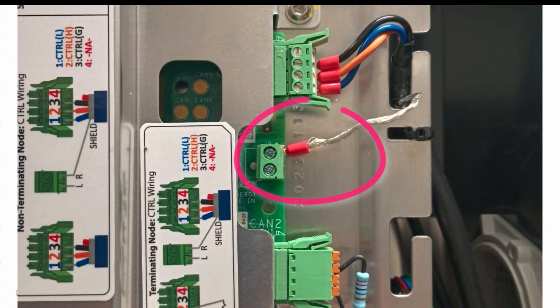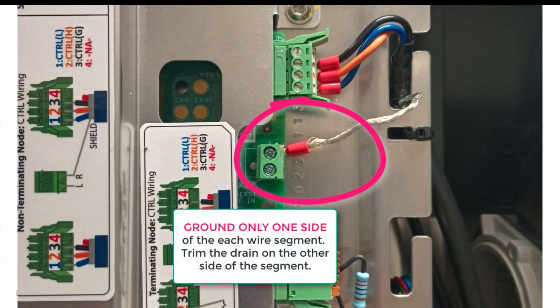Connecting the drain wire. The drain wire on each control cable segment between devices must be wired to ground at one side or the other of the cable. The drain wire on the other side can simply be trimmed off.